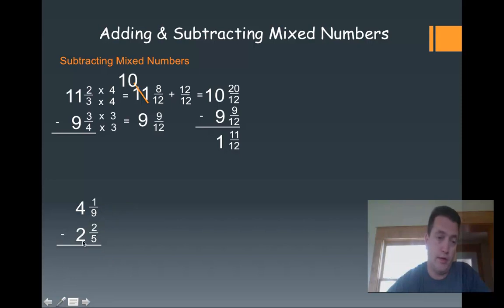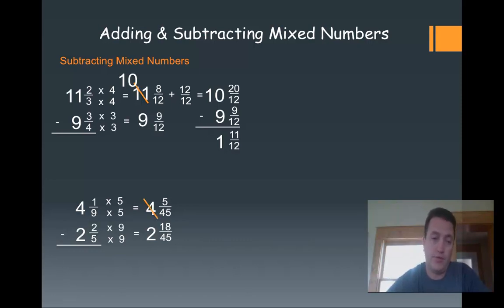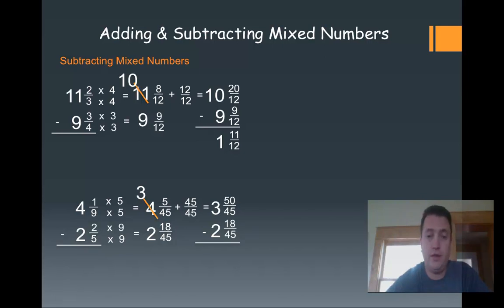Let's look at our next one: 4 and 1 ninth minus 2 and 2 fifths. Neither is a factor of the other, so I multiply both top and bottom to get a common denominator of 45. That gives me 4 and 5 forty-fifths minus 2 and 18 forty-fifths. Since 5 forty-fifths cannot take away 18, I borrow again—make that 4 a 3 and add 45 forty-fifths for a total of 3 and 50 forty-fifths. Now 50 take away 18 gives me 32 forty-fifths, and 3 take away 2 is 1. That gives me 1 and 32 forty-fifths, which is already in lowest terms since 32 and 45 share no common factors.